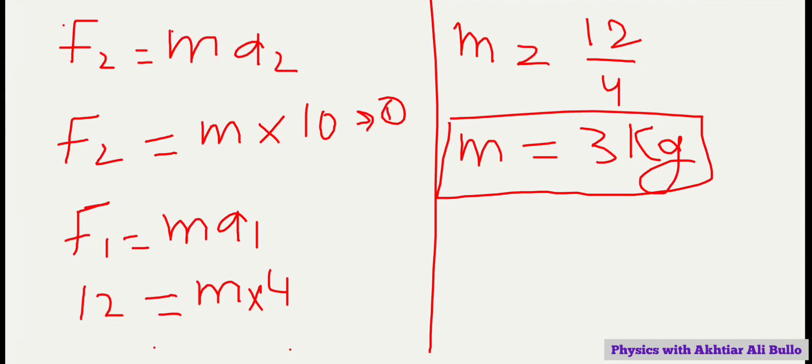By putting this value in equation number 1, which is F2 equals m into 10, so F2 equals 10 into 3. We have obtained F2 is 30 newtons.